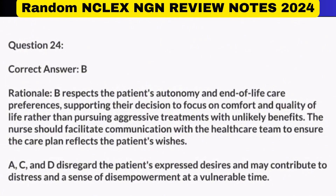Correct answer: B. Rationale: B respects the patient's autonomy and end-of-life care preferences, supporting their decision to focus on comfort and quality of life rather than pursuing aggressive treatments with unlikely benefits. The nurse should facilitate communication with the healthcare team to ensure the care plan reflects the patient's wishes. A, C, and D disregard the patient's expressed desires and may contribute to distress and a sense of disempowerment at a vulnerable time.